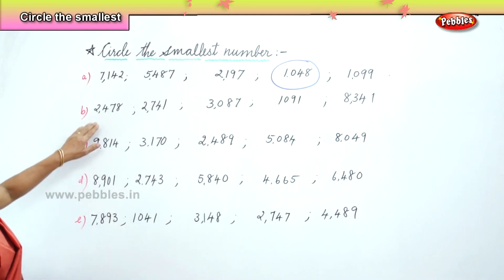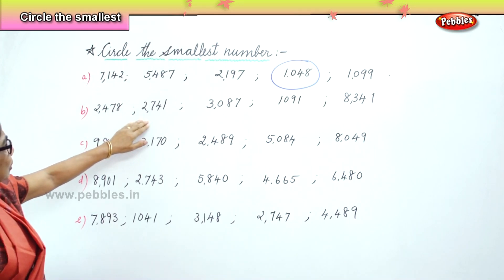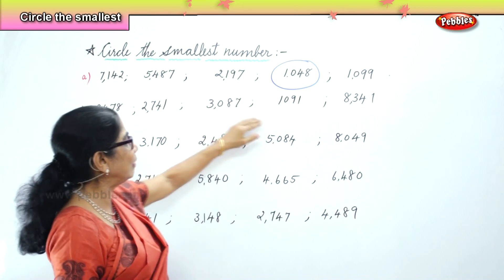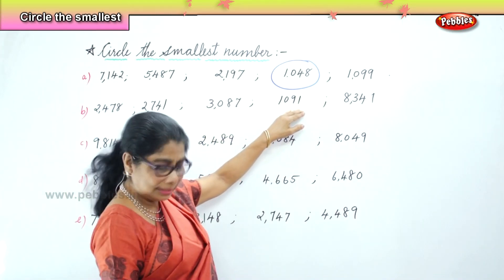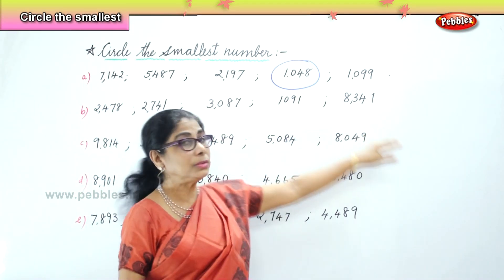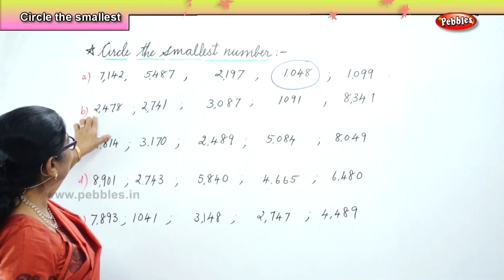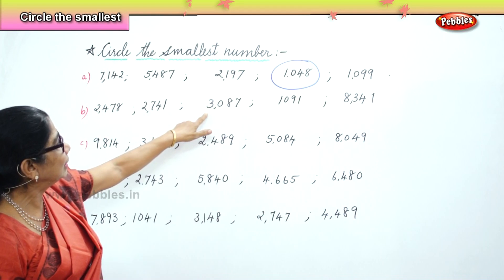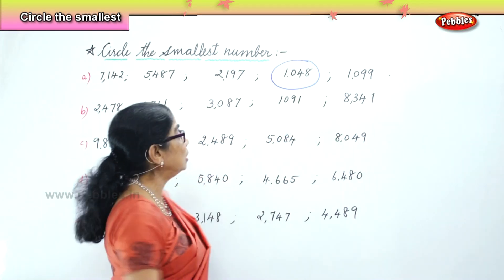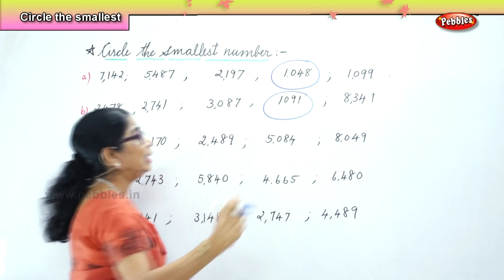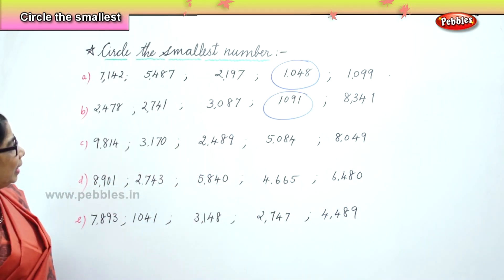Now let us look at the second set. You have 2,478, 2,741, 3,087, 1,091, 8,340. Let us look at the thousands: 2,000, 2,000, 3,000, and 8,000. So 1,091 is certainly the smallest among the five.